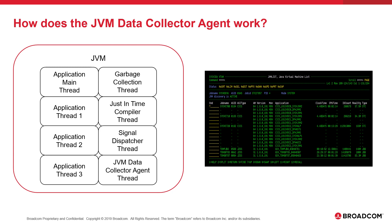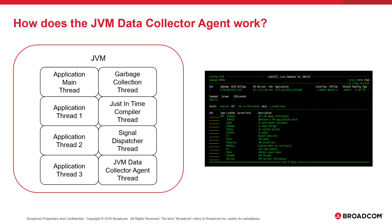The user drills into the desired JVM to see available commands using the Line Command assist command question mark. The user might be interested in thread performance, so they locate the Threads Line command and select it. At this point, the user is requesting detailed information from the JVM, which will be obtained by the CA SysView JVM Data Collector Agent running within the JVM. The CA SysView user session sends a request to retrieve thread information, and the Agent then collects the appropriate data — in this case, thread statistics from all threads within the JVM.